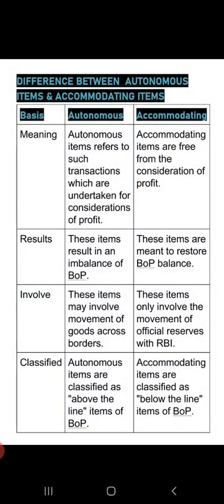So autonomous items: transactions are done for profit motive, and accommodating items: transactions are done for BOP imbalance correction. In terms of results, autonomous items lead to imbalances while accommodating items restore balance. Autonomous items involve movement of goods, while accommodating items only involve movement of official reserves. In terms of classification, autonomous items are called above the line items and accommodating items are called below the line items. This topic is very important — a 3 to 4 mark question can come from it in exams, so I have written 4 points for you.